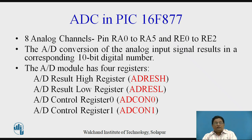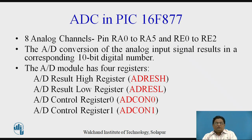The A-to-D conversion of the analog input signal results in a corresponding 10-bit digital number, meaning the output of this ADC is 10-bit. Four registers are associated with the ADC in the PIC controller: ADRESH, ADRESL, ADCON0, and ADCON1.